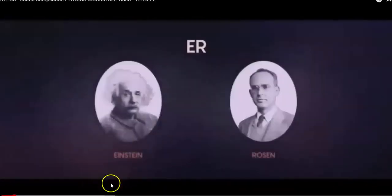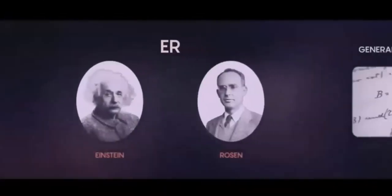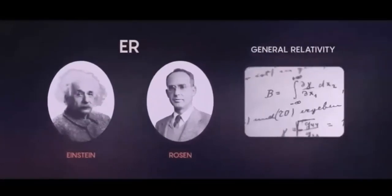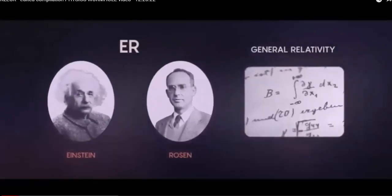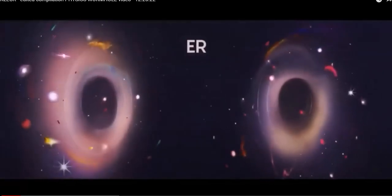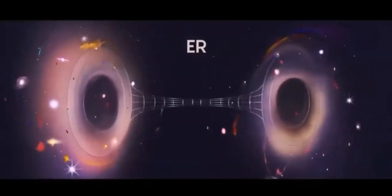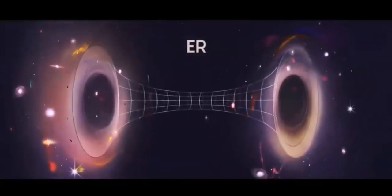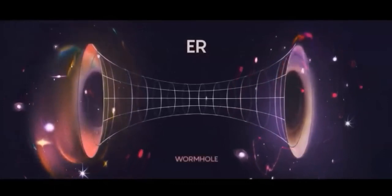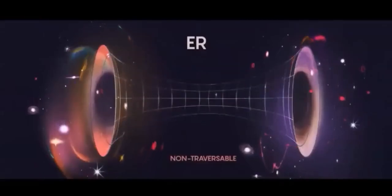Einstein and Rosen pointed out that solutions to general relativity allowed for two black holes which are connected with a kind of bridge — what we call a wormhole. But that wormhole has the property of being non-traversible.